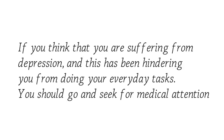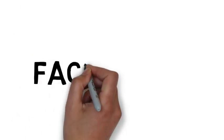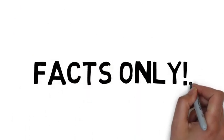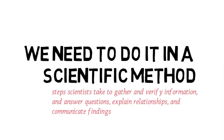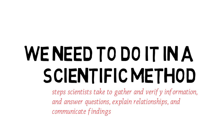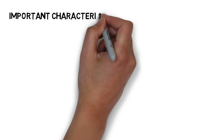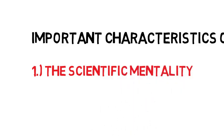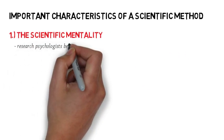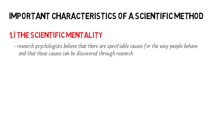Now, dito sa experimental psych, we only need facts sa pag-research natin. Kaya we need to do everything in a scientific method. Scientific method is the step that scientists take to gather and verify information. Now, what are the important characteristics of a scientific method? First, we must have a scientific mentality. Research psychologists believe that there are specifiable causes for the way that people behave, and we can discover this through research.